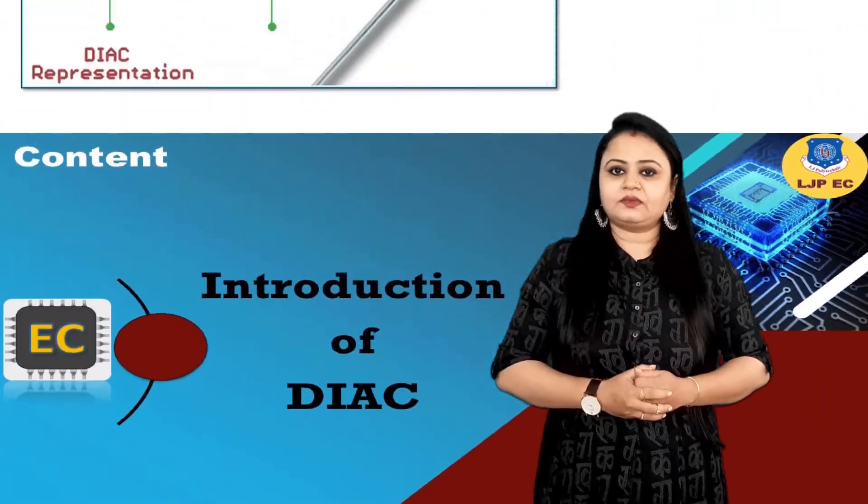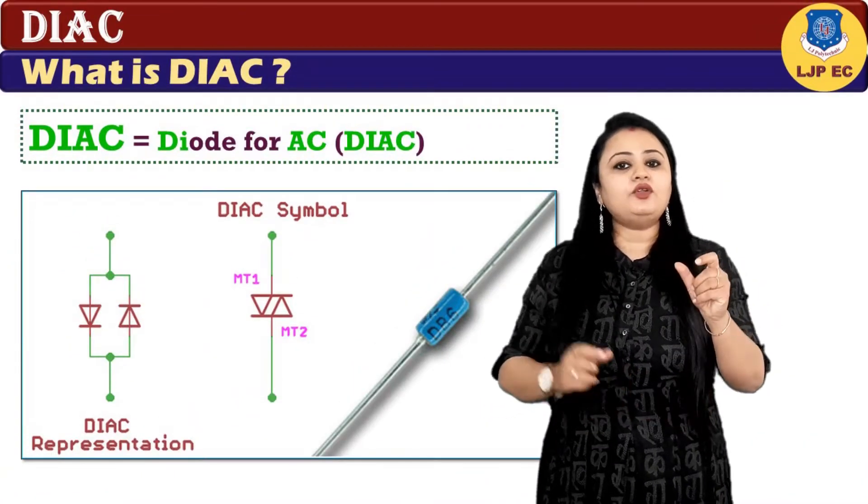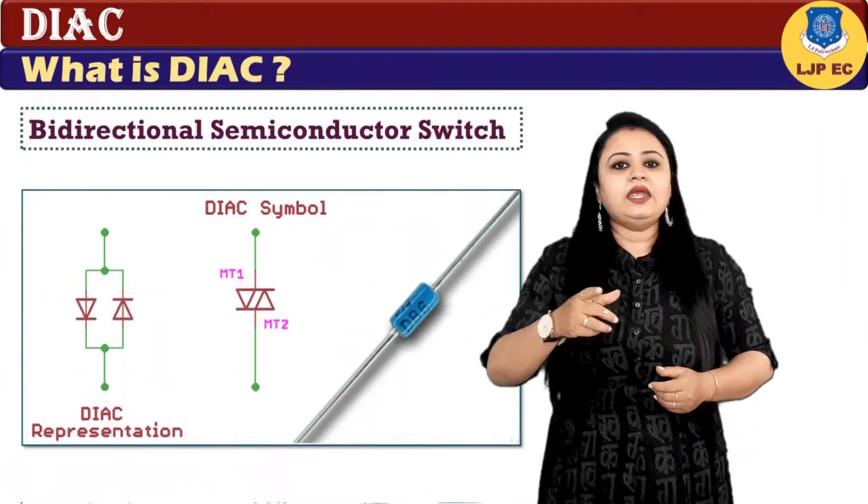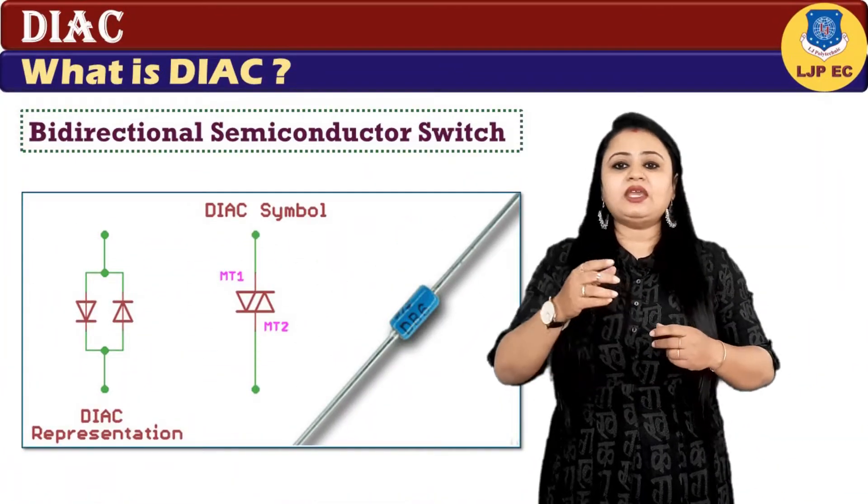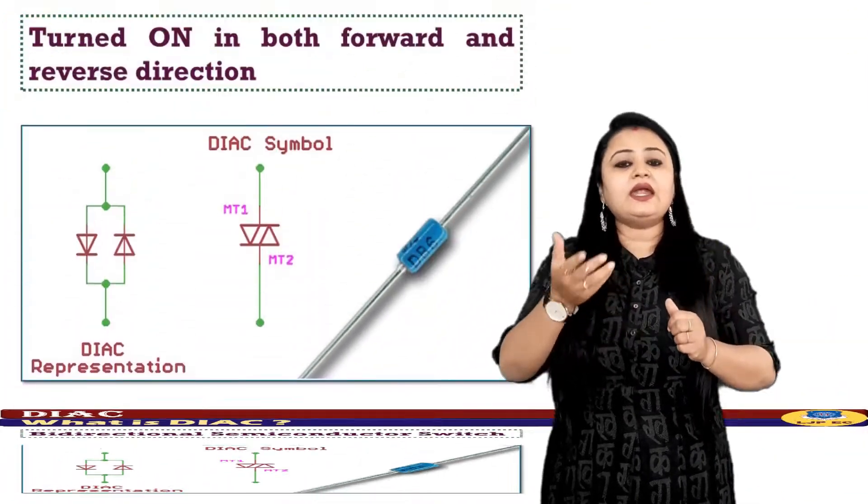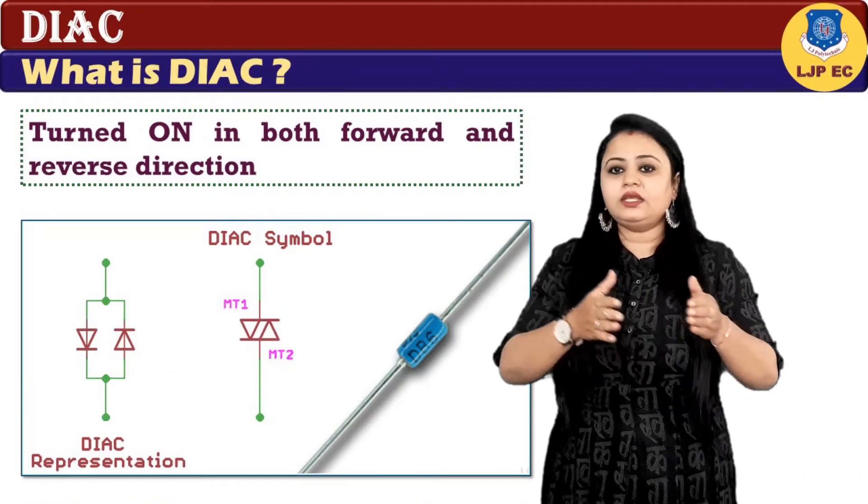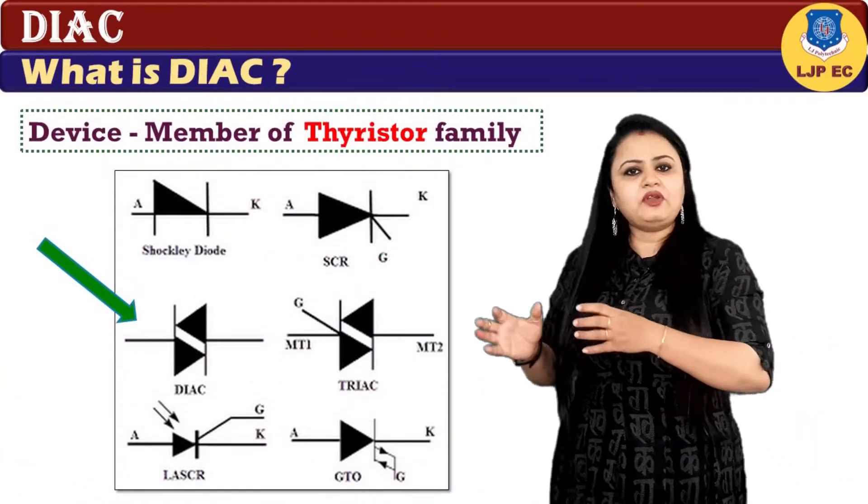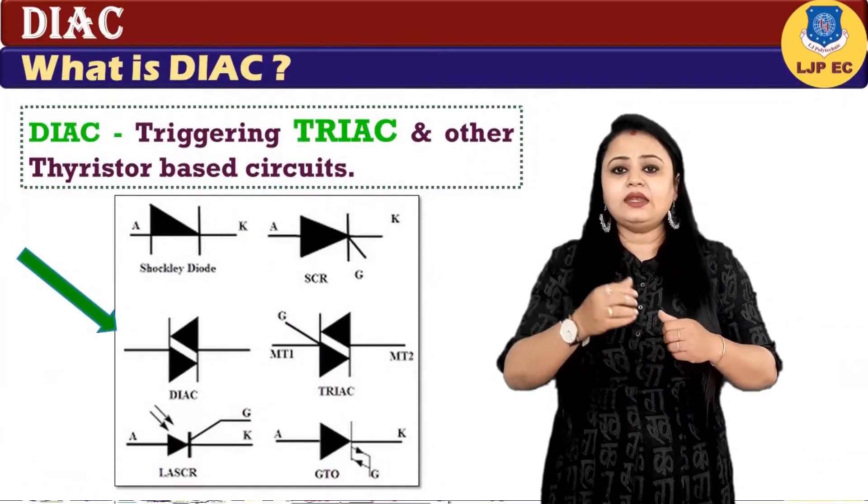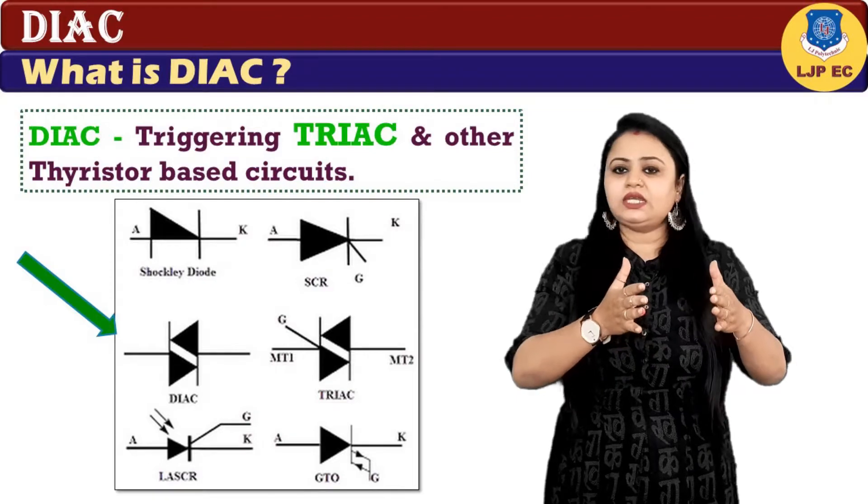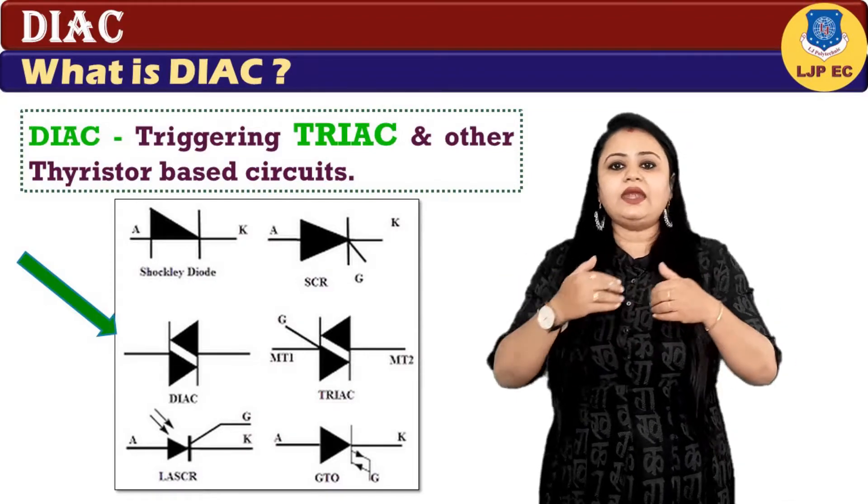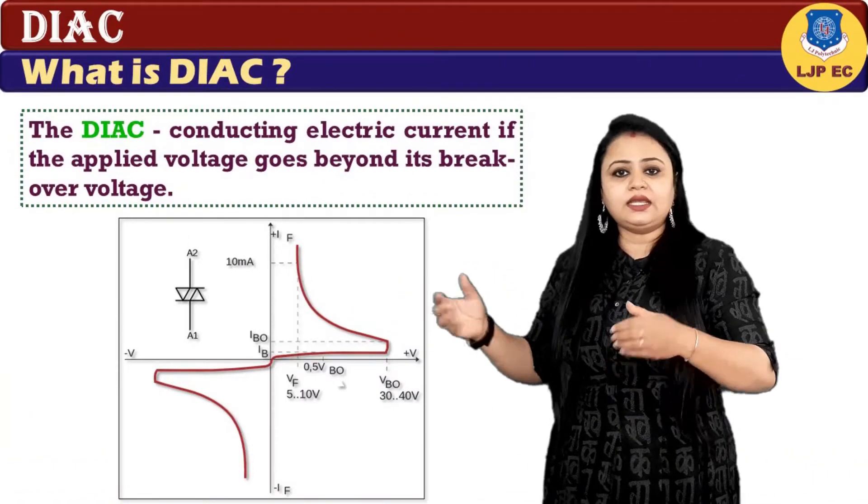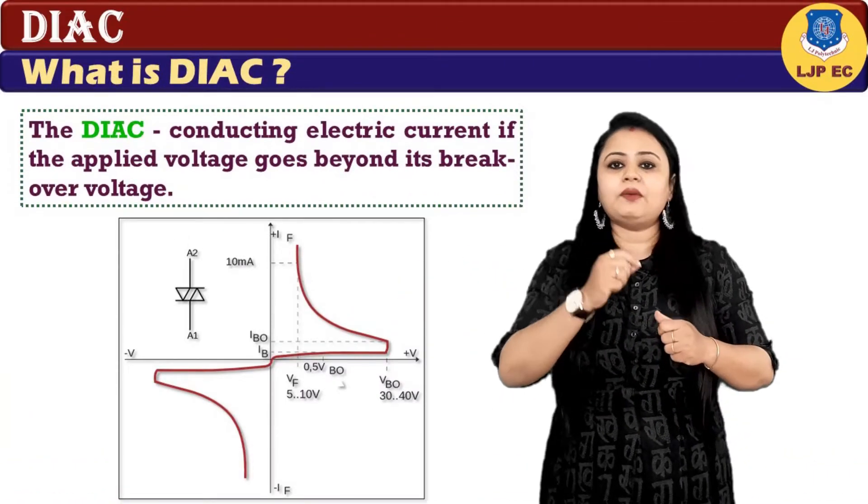The term DIAC stands for Diode for Alternating Current. It is a bi-directional semiconductor switch that can be turned on in both forward and reverse directions. The device is a member of the thyristor family and is mostly used in triggering TRIACs and other thyristor-based circuits.